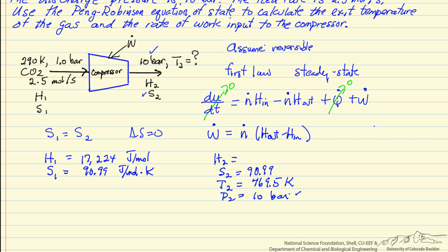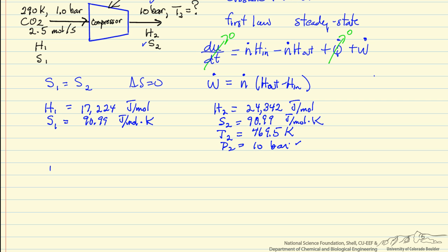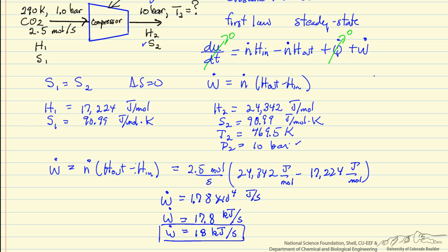So we can now calculate the work: N dot H out minus H in, which is H2 minus H1. So 2.5 moles per second is the feed rate, 24,342 joules per mole is the outlet value for the enthalpy, and the inlet value is 17,224. So we do the calculation, convert it to kilojoules, and then the correct number of significant figures that's justified at most is 2 in this problem. So we've calculated the work input per time and we've calculated the outlet temperature.